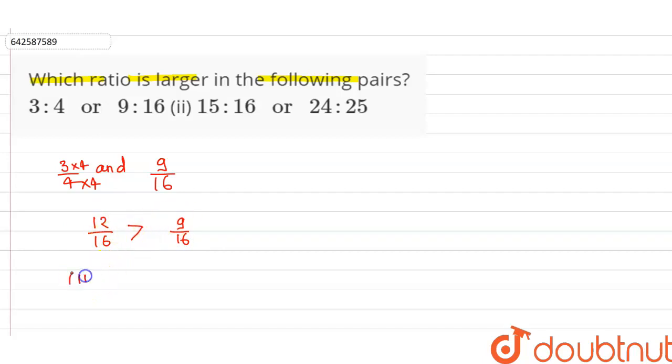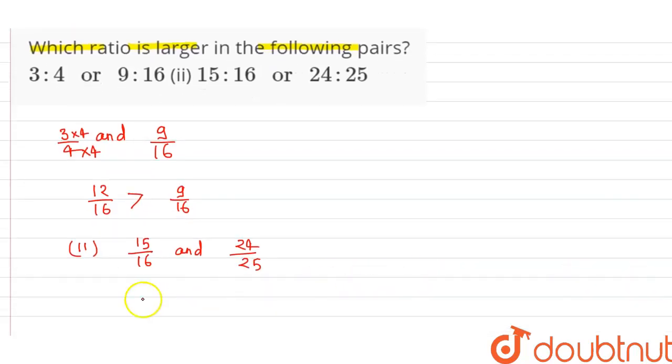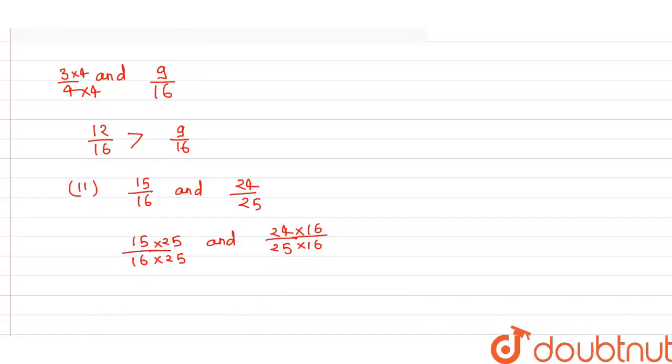So the second one is 15 by 16 and 24 by 25. We will convert into equivalent ratios. Then it will be 15 by 16 when we multiply 25 in numerator and 25 in denominator, and 24 by 25 when we multiply 16 in numerator and 16 in denominator. Then it will be 375 upon 400 and 384 upon 400. So you can see here that this part is greater than this part.